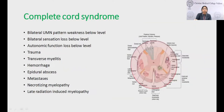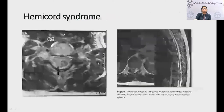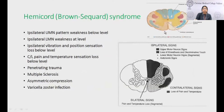Complete cord syndrome is a complete horizontal involvement of the spinal cord. Features include bilateral pattern of weakness below the level, sensory loss to pain, temperature, vibration, and position sense below the level, and autonomic dysfunction below the level. Common etiologies include trauma, complete transverse myelitis, hemorrhage into the spinal cord, epidural abscess, metastasis, necrotizing myelopathy, and late radiation-induced myelopathy.